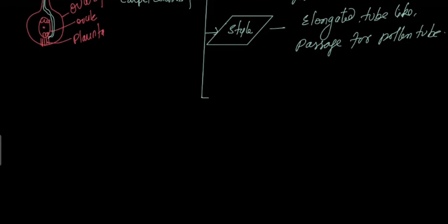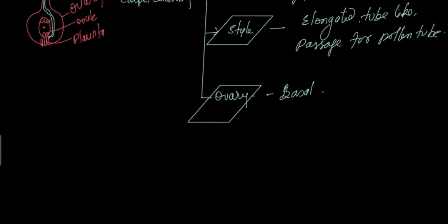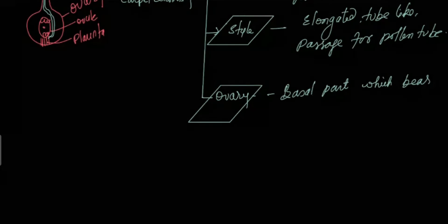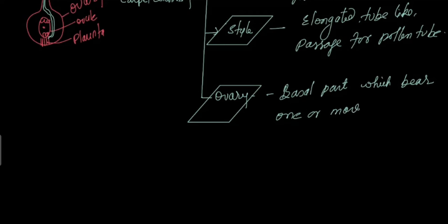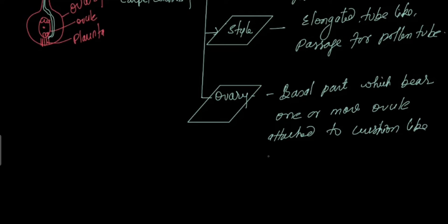The third and lowest part is the ovary. The ovary is the basal part, which contains one or more ovules attached to a cushion-like placenta.